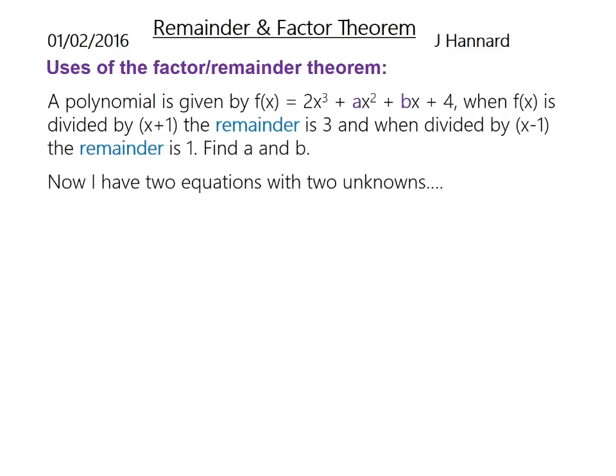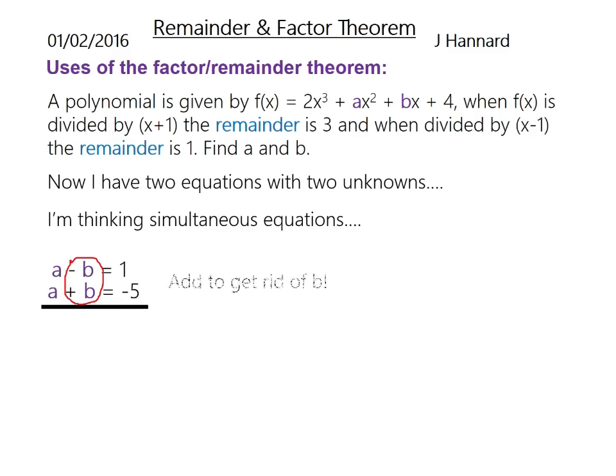Now then, I have 2 equations with 2 unknowns. So this should be ringing alarm bells from higher GCSE. I'm thinking simultaneous equations. So these are 2 equations: a - b = 1 and a + b = -5. Now I always love to match the middles, have them the same amount. It's lovely here because they're both one lot of b. So I can basically just add these to get rid of the b. And you get 2a = -4, because a add a is 2a, and 1 add -5 is -4. So your a must equal -2. And that means b must equal -3 by putting that -2 back through any of these equations.